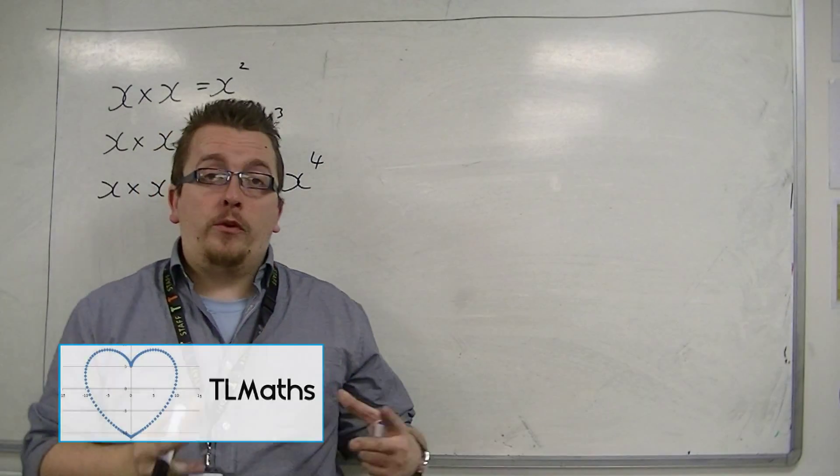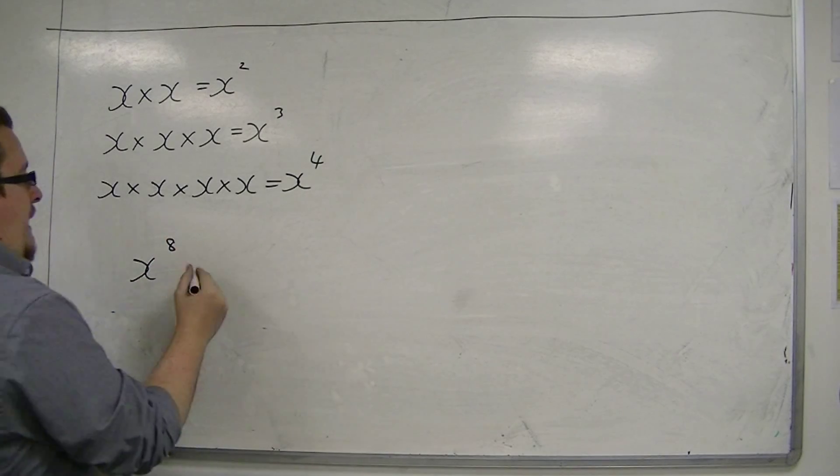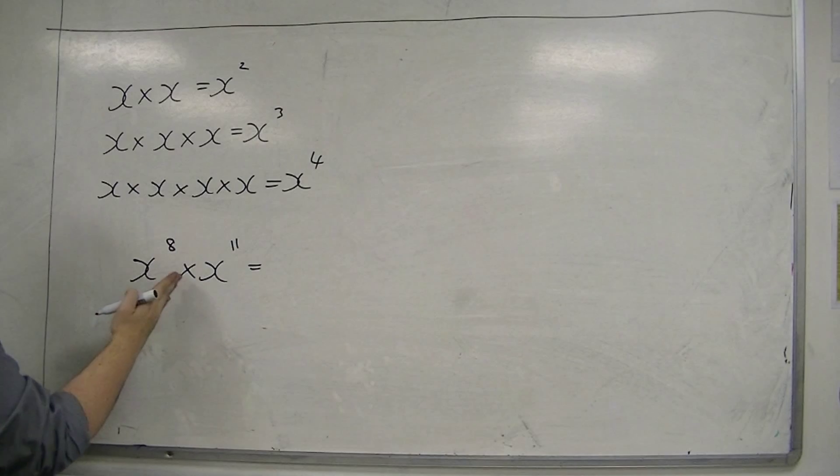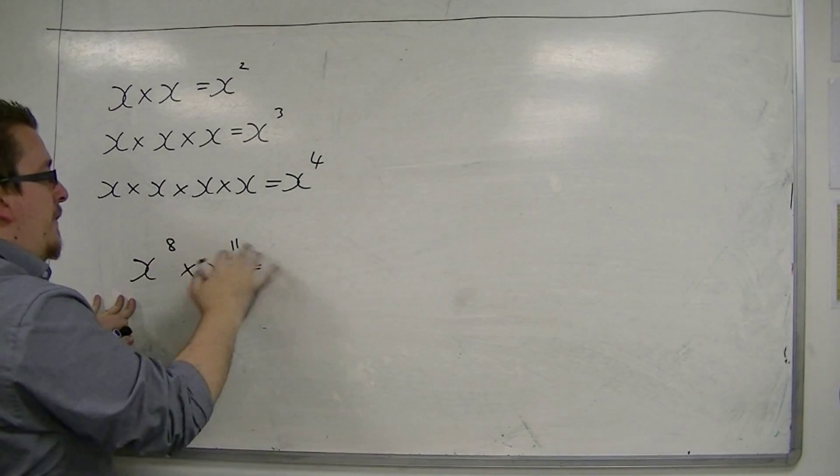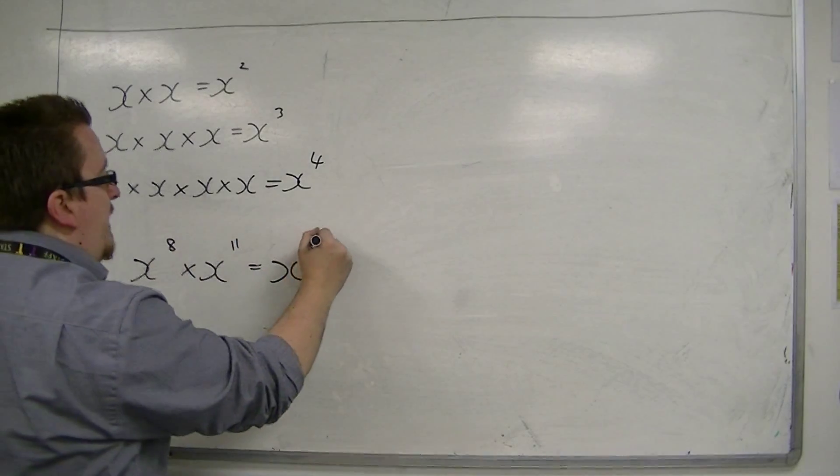In the previous video, we saw that if you had something like x to the power of 8, and you multiplied that by x to the power of 11, then when you multiply these things together, you would add the powers together. So we would have x to the 8 plus 11, so x to the 19.